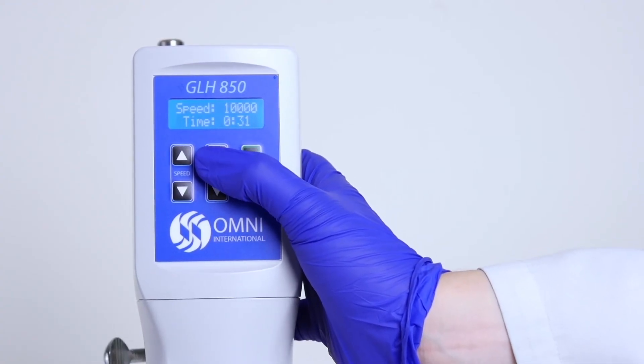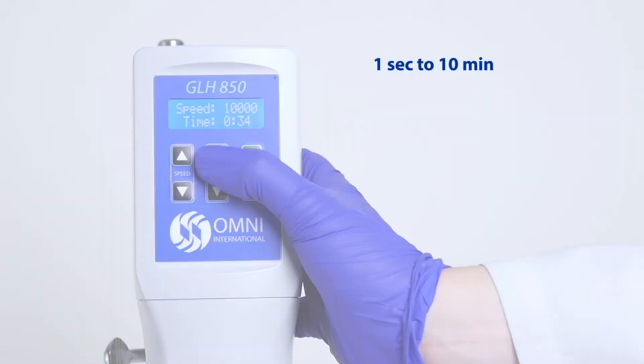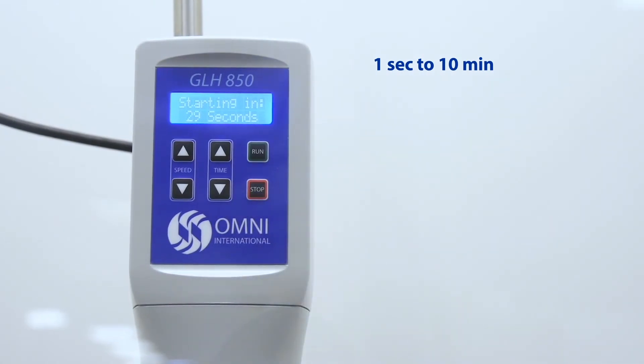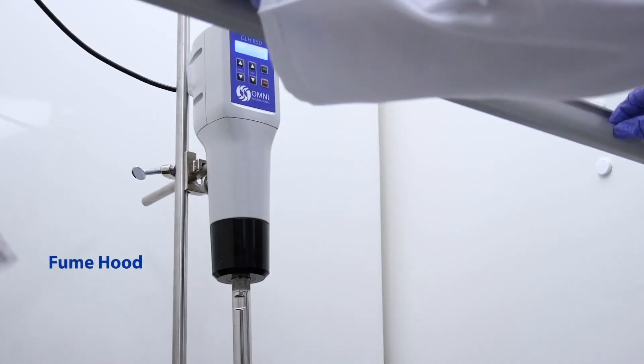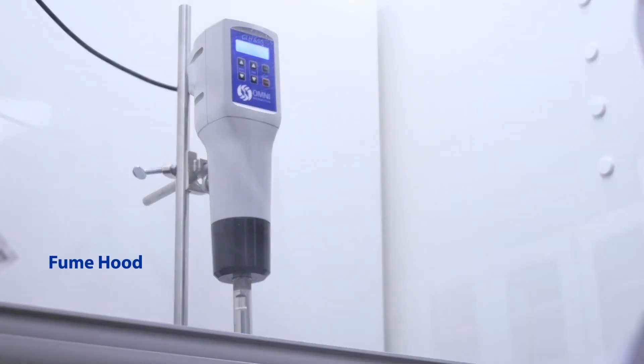The Omni GLH 850 features a timer that can be set from 1 second to 10 minutes and also features a delayed motor start time for applications requiring a fume hood during homogenization.